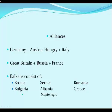Germany, Austria-Hungary, and Italy formed an alliance that would be called the Central Powers. Great Britain, Russia, and France — traditional enemies — would be called the Allies. Then there was the Balkans region between Italy and Europe on the Adriatic Sea, consisting of Bosnia, Bulgaria, Serbia, Albania, Montenegro, Romania, and Greece — all being controlled by Austria-Hungary.